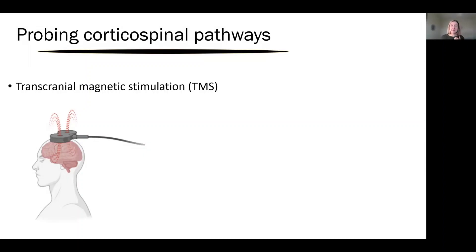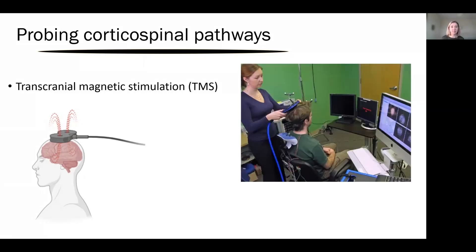This technique stimulates the cortical neurons — a part of the brain that sends signals down to the muscles. In this coil that I'm holding over the participant's head, you discharge a large magnetic field through wires in the coil. It generates a magnetic field which can pass through the scalp painlessly and then induce a current in the neurons underneath it.